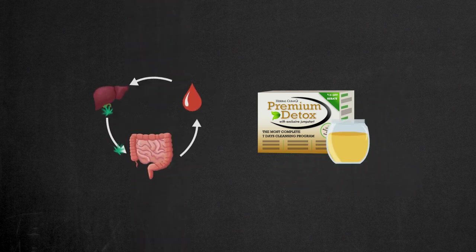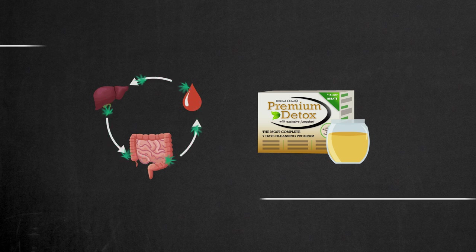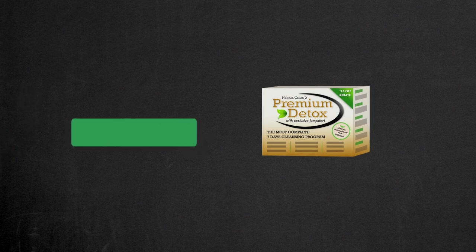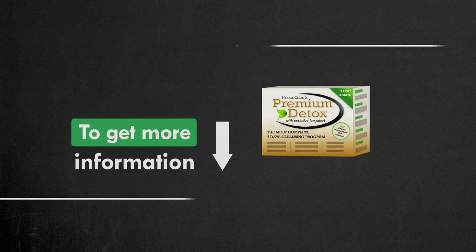Apple pectin will absorb THC in the intestines and prevent them from being reabsorbed back into the blood. To get this kit, follow the link below the video.